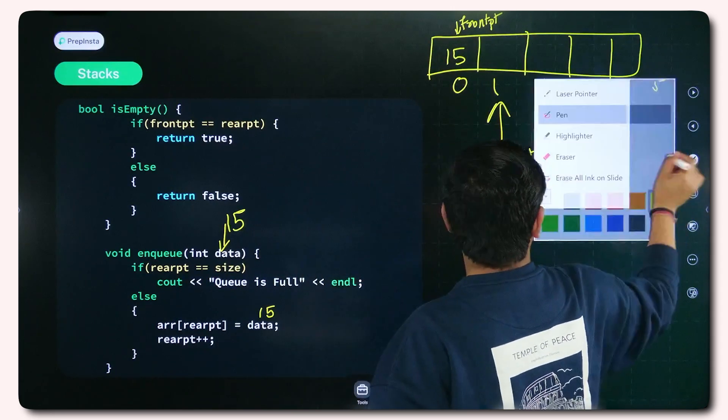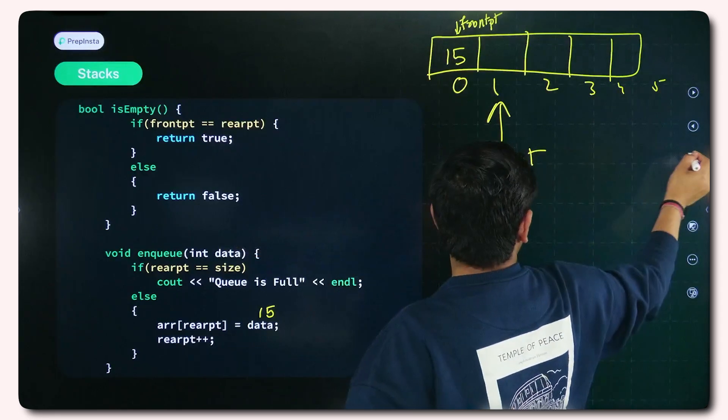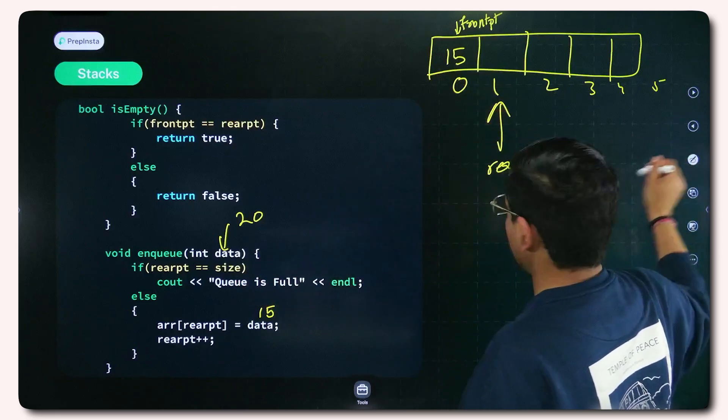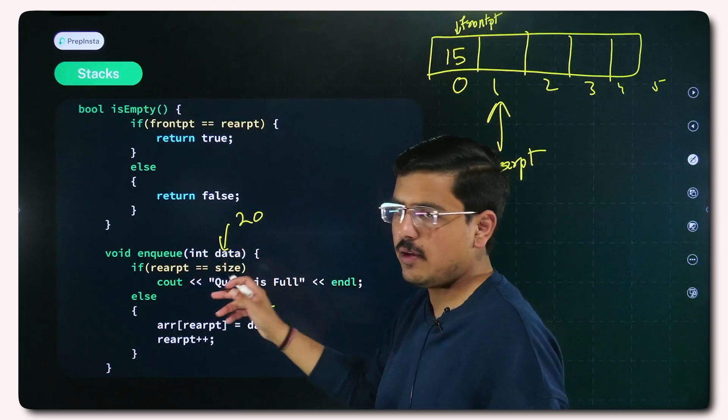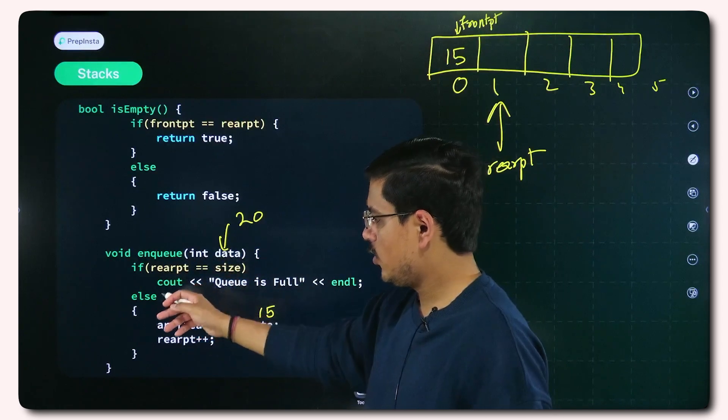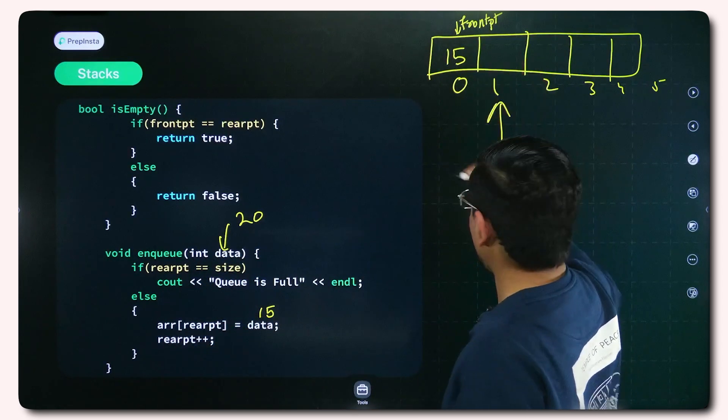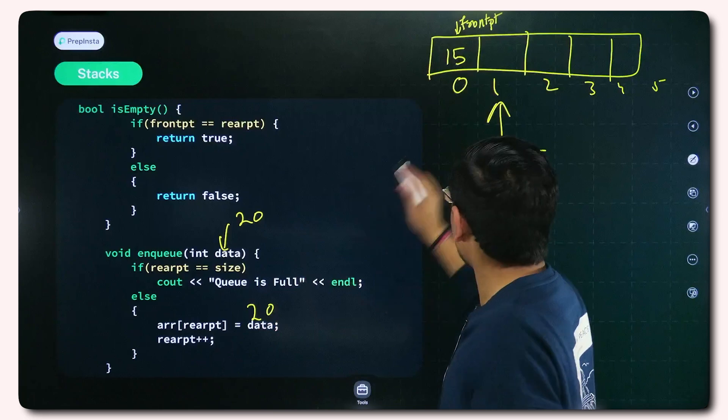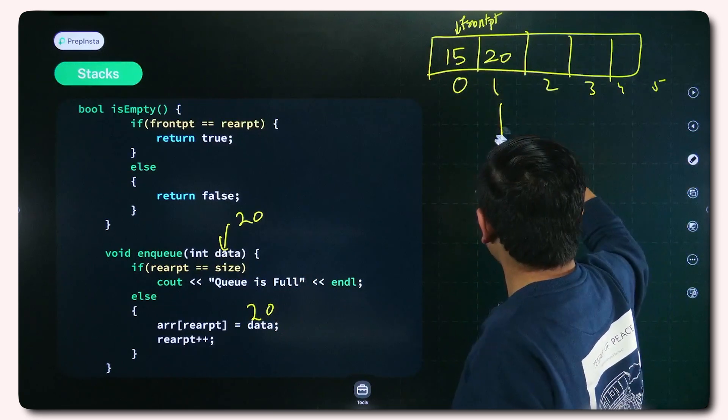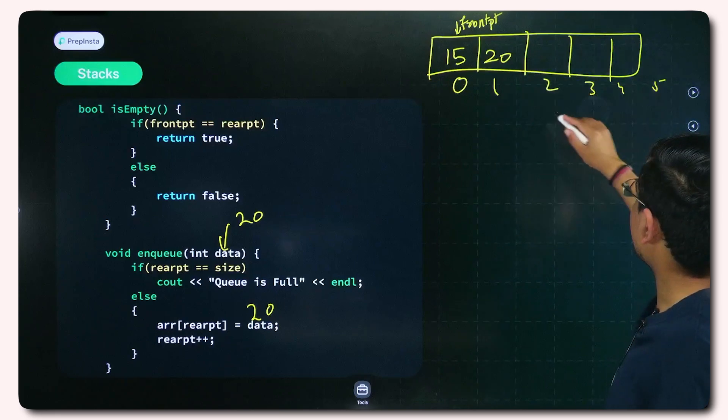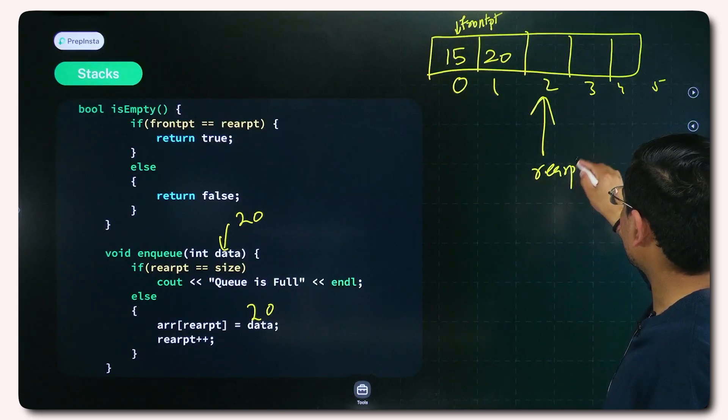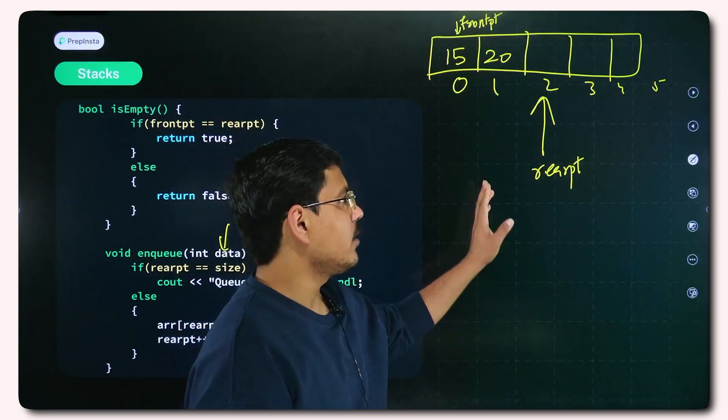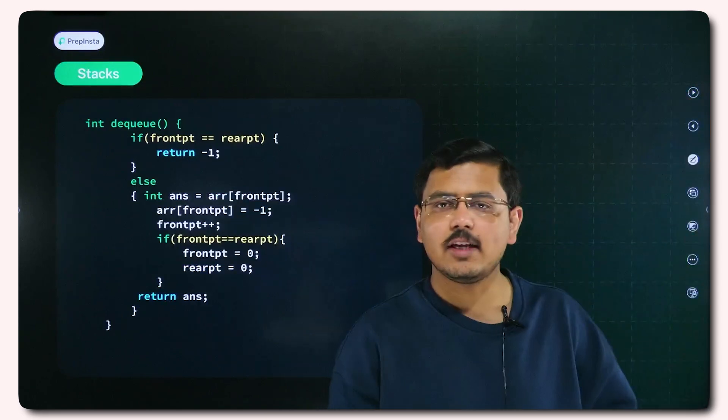This is how enqueuing happens. Now I again do the enqueue, similar process would happen. I enter an element 20 here. Queue is not full because rear pointer is right now 1, size is 5, 1 is not equal to 5, so this if block wouldn't work, you go to the else block. At this location you add 20, because 20 is the data now. I add 20 here and I increment this rear pointer. Rear PT is incremented. Now when rear PT is incremented, we will check how dequeue happens.